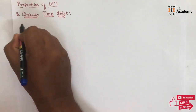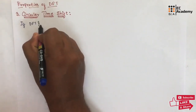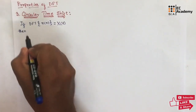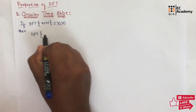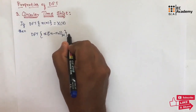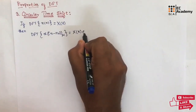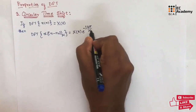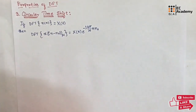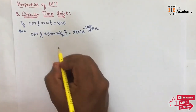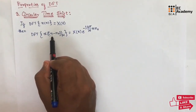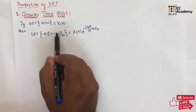First, let us write the statement. If DFT of X of N is equal to X of K, then we can write DFT of X double bracket N minus N naught mod N, will be equal to X of K, e to the power of minus j 2 pi by N into K N naught. Here, the double bracket represents the circular shift. Along with this, we are shifting the signal X of N towards the right side by the value N naught.